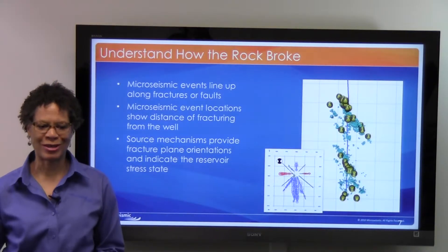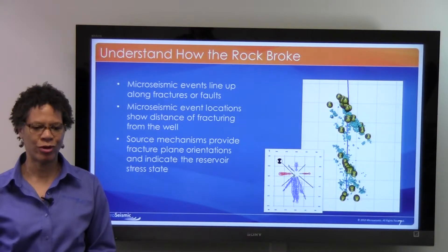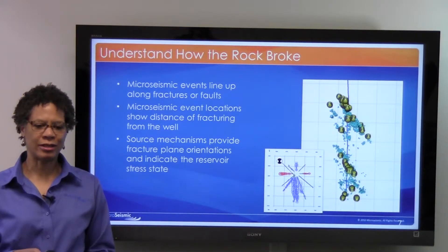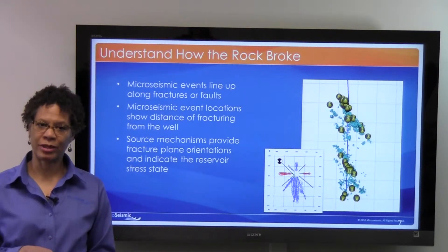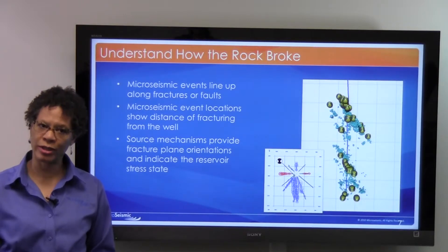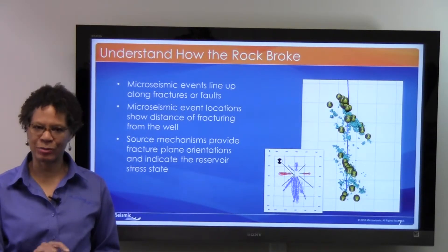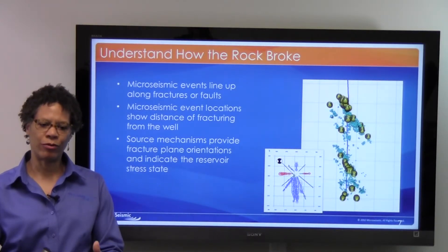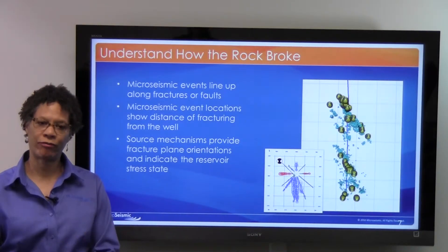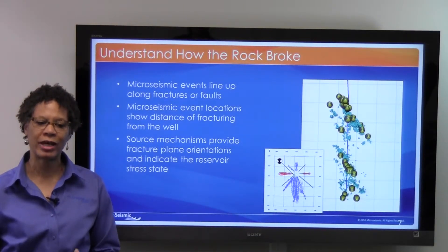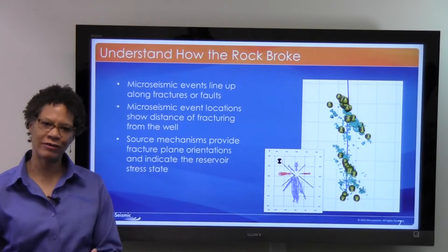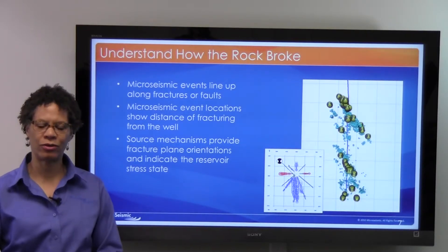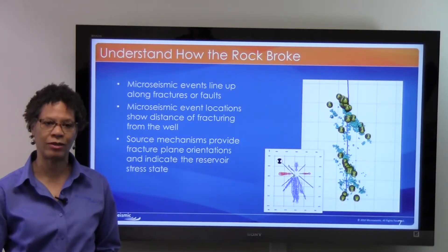Understanding how the rock broke is also very important for planning future wells. In this case, the wellbore is again north-south, but the micro-seismic events form trends in a northwest-southeast direction, which wasn't the expected result — they expected the trends to be east-west. We inverted the micro-seismic data from the surface for their source mechanisms and found that all of these events were failing in strike-slip. That helps plan for future wells — you know how to orient your wellbore and you also know something about the stress state in the reservoir.